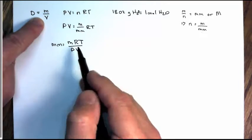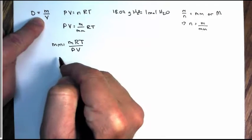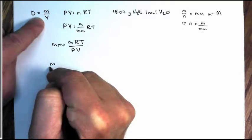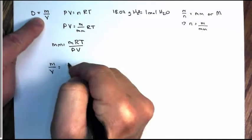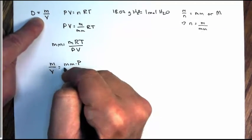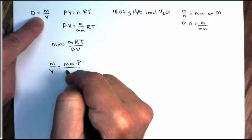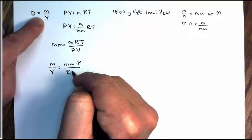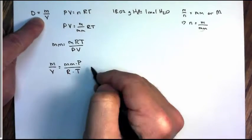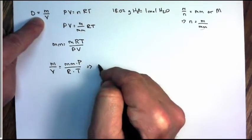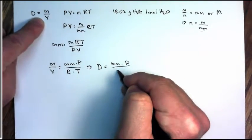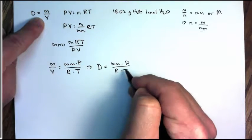Remember density is mass over volume. So if I rearrange it, manipulate this properly using what I know about algebra, I can end up with mass over volume equals molar mass times pressure over the gas constant, the ideal gas constant or universal gas constant times the Kelvin temperature, which is the same thing as saying density equals molar mass times pressure over the gas constant times temperature.